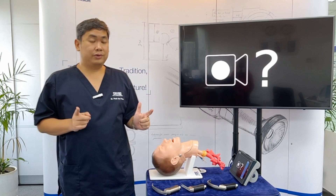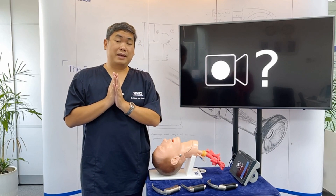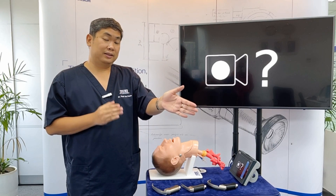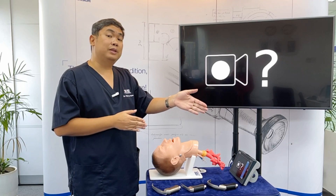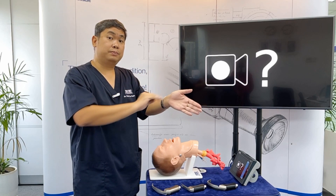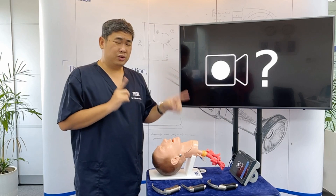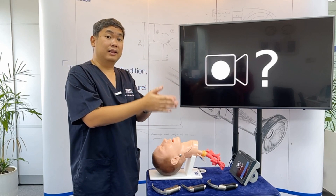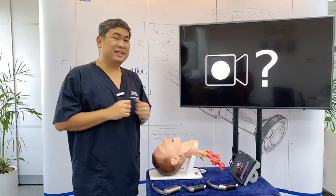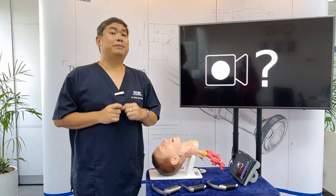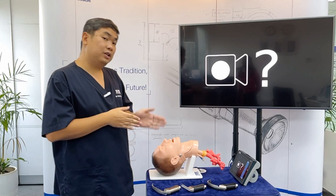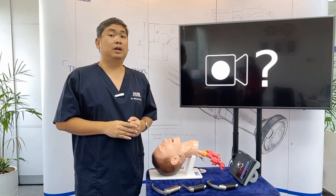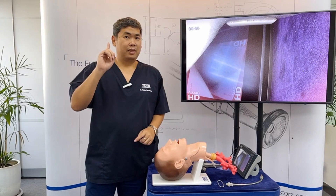In summary: when using a Macintosh blade, enter at the right side and swipe the tongue so you have a bigger space to work with. When using a hyper-angulated blade, insert in the midline. When using a straight blade, bypass the tongue by inserting it on the side going in the direction of the vocal cords.